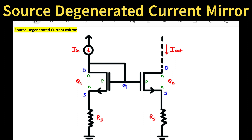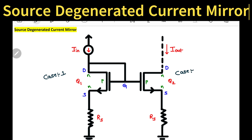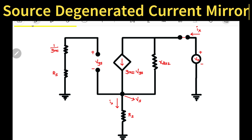Again, similar to the analysis done for simple NMOS current mirror: case number 1, we have to draw the small signal equivalent model for Q1, and case number 2, we have to draw the small signal equivalent model for transistor Q2. In the previous concept we got the answer for Q1 as 1/GM1, but here this RS component gets added up. So here, this is the final small signal equivalent model for source degenerated current mirror, where this particular component is for Q1.